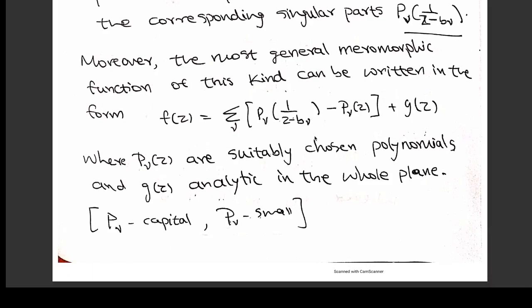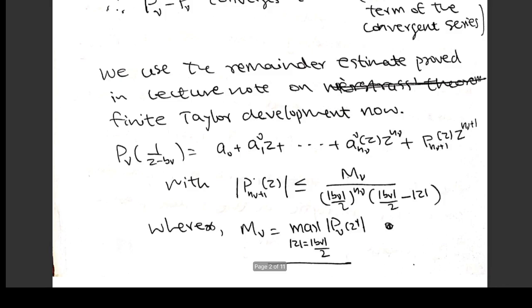In general, it tells you how such a function looks. A general meromorphic function of this kind can be written in this form: we collect all the singular parts, take the sum, and subtract a polynomial p_ν. This is for the convergence of the infinite series. The general form is this sum plus some arbitrary analytic function. Here, the small p_ν is suitably chosen so that this becomes a convergent series. That is the statement of the Mittag-Leffler theorem.